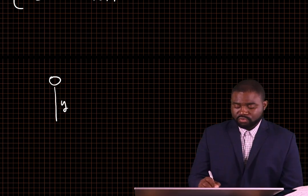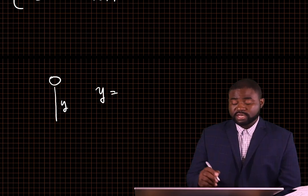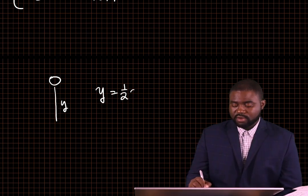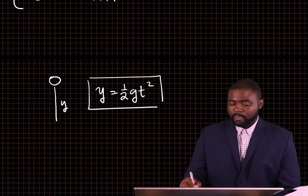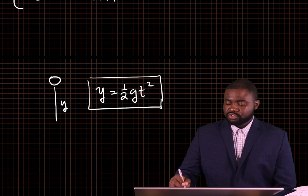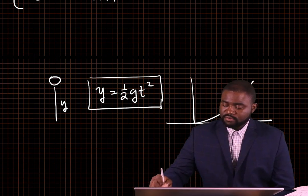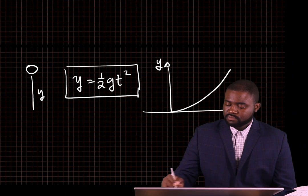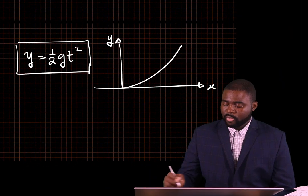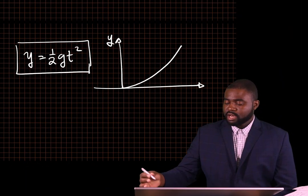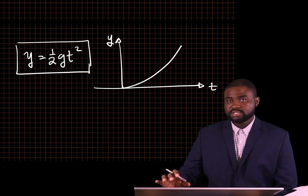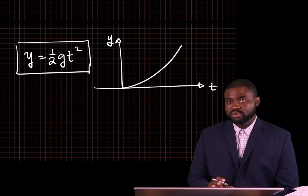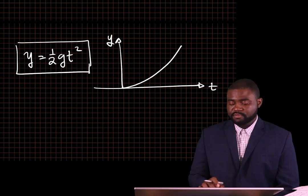The relationship between that height and time is given by y = 1/2 gt². If you draw this graph, it's going to be a curve. But, there are ways that you can actually use to linearize this function to make it easy on you.